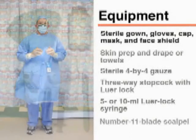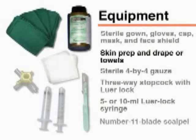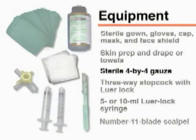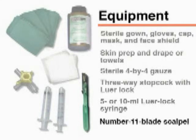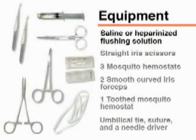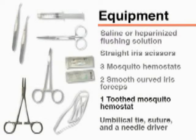Most of the equipment can be found in commercially prepared kits and should include skin preparation solution, a surgical drape with central opening and/or sterile towels, sterile 4x4 gauze, a three-way stopcock with a luer lock for each catheter port, a 5 or 10 milliliter luer lock syringe for each port, a number 11 blade scalpel, saline or heparinized flushing solution, straight iris scissors, three mosquito hemostats, two smooth curved iris forceps, one toothed mosquito hemostat, an umbilical tie, suture, and a needle driver.